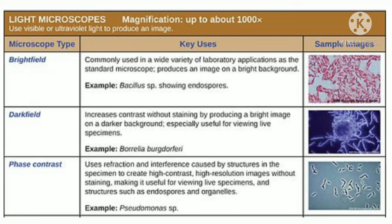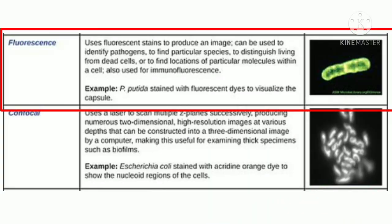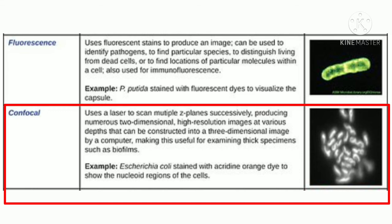The fourth type is the fluorescence microscope. It has various applications: identifying pathogens, distinguishing between living and dead cells, and defining the location of particular molecules within a cell — called immunofluorescence. It includes diagnostic techniques such as the fluorescent antibody technique, direct fluorescent antigen method, and indirect fluorescent antibody method for detection of antibodies.